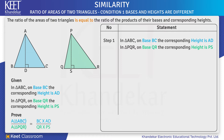The formula of area of triangle is half into base into height. Therefore, in step 2: area of triangle ABC equals half into BC into AD, and area of triangle PQR equals half into QR into PS.